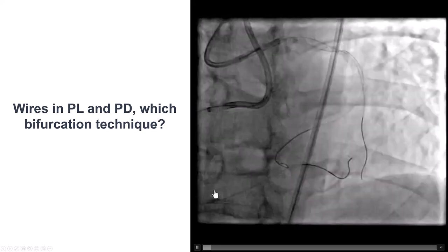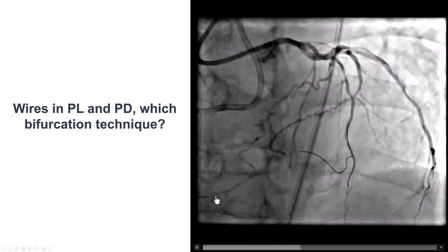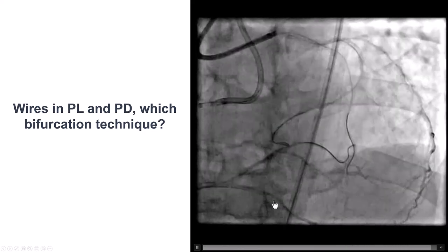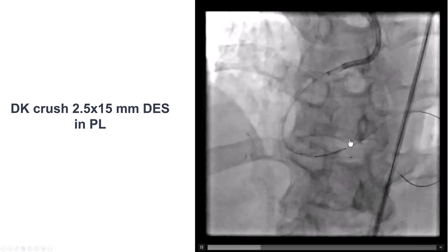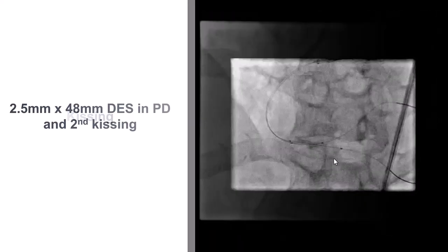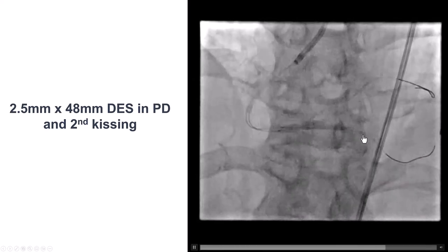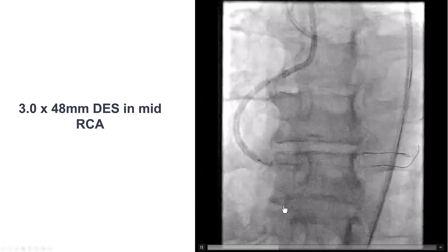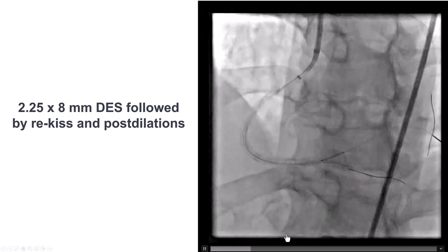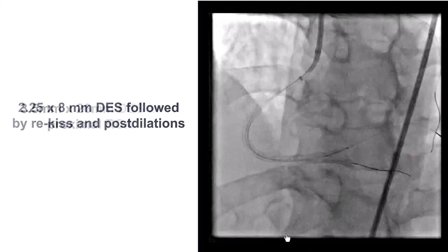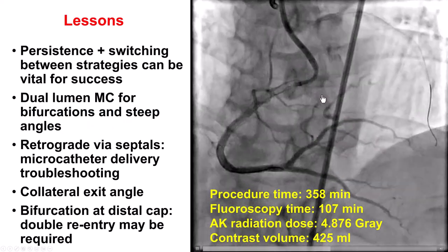This is an example where we definitely needed a dual stent technique. In this case, DK crush was the preferable approach because we don't lose wire position in the main vessel. We performed DK crush with a stent into the right posterolateral, re-wired and did the first kissing balloon. Then we placed a stent going from the distal RCA into the PDA, re-wired, did the second kissing, and extended all the way back. There was a residual lesion in the posterolateral that was successfully addressed, and we finally covered the proximal right coronary artery.